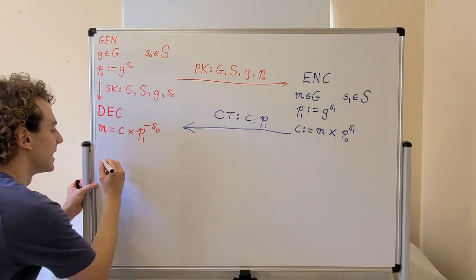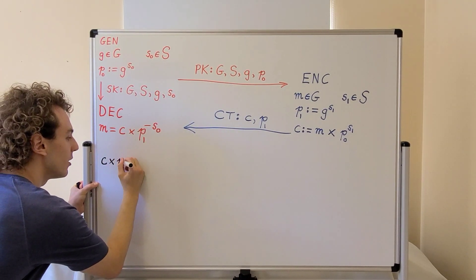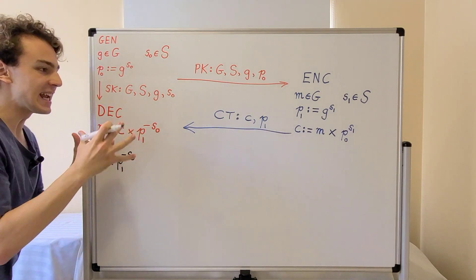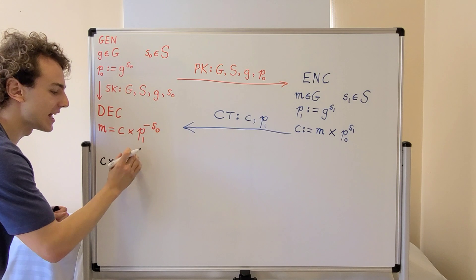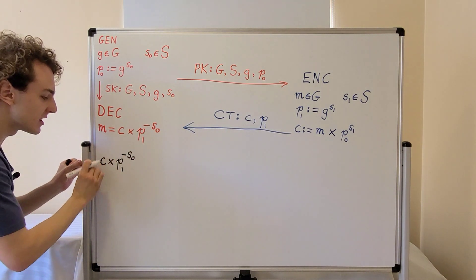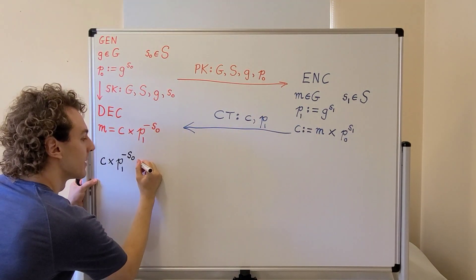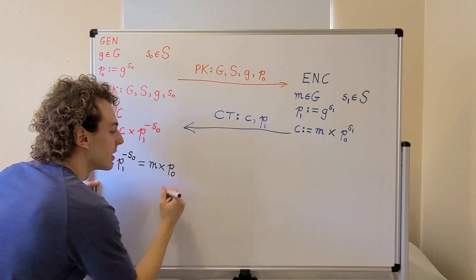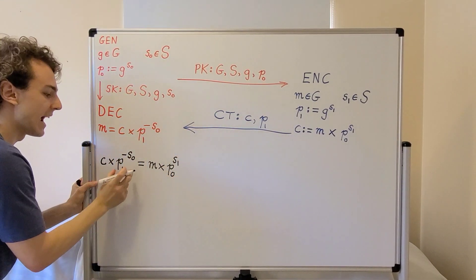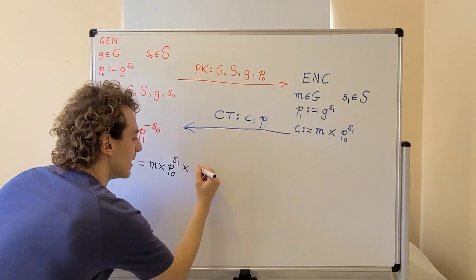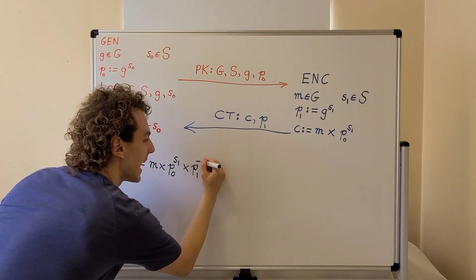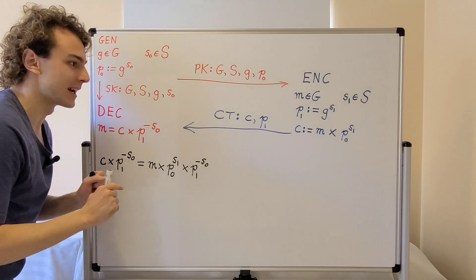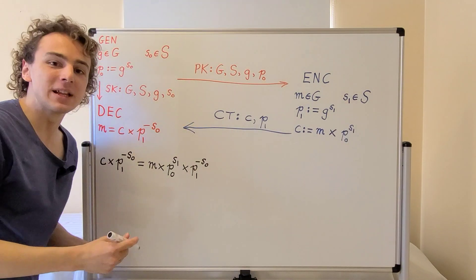Let's see why this decryption procedure works. We compute c times p1 to the power of minus s0. The minus sign means we are computing the inverse of p1 to the power of s0. First, let's substitute the definition of c: the ciphertext is the message times p0 to the power of s1. Then we also have times p1 to the power of minus s0. Here is a very interesting fact: p1 to the power of s0 and p0 to the power of s1 are actually the same value.